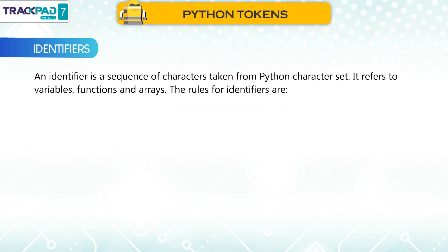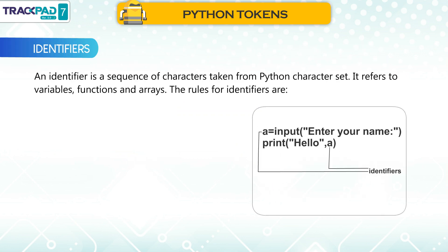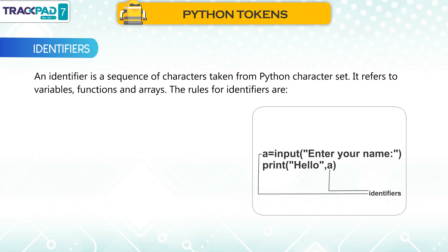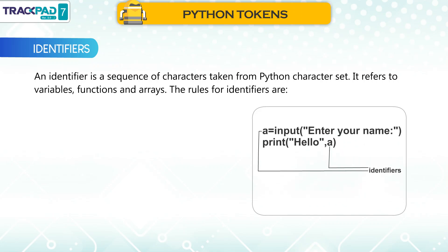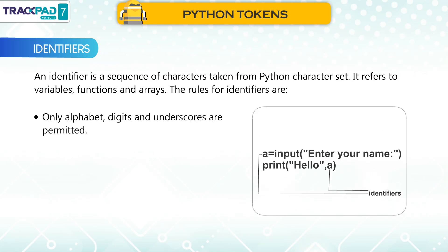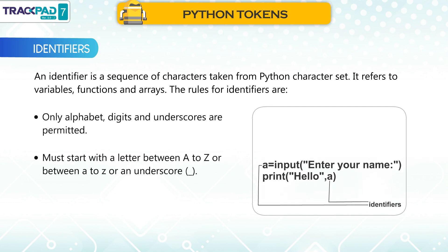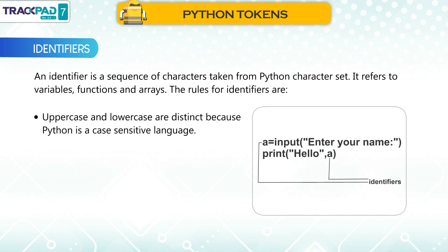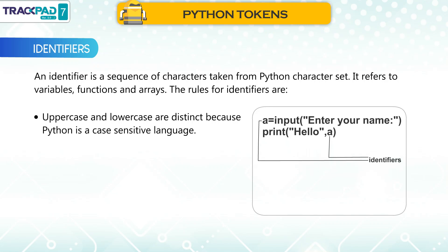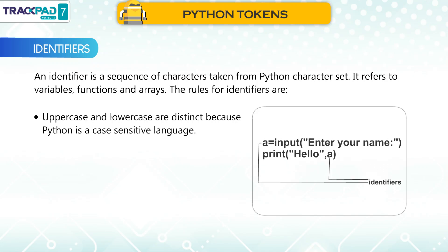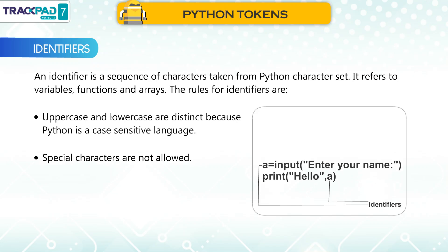Identifiers. An identifier is a sequence of characters taken from the Python character set. It refers to variables, functions, and arrays. The rules for identifiers are: only alphabets, digits, and underscores are permitted. It must start with a letter between uppercase A to Z, lowercase a to z, or an underscore. Uppercase and lowercase are distinct because Python is a case-sensitive language. Special characters are not allowed.